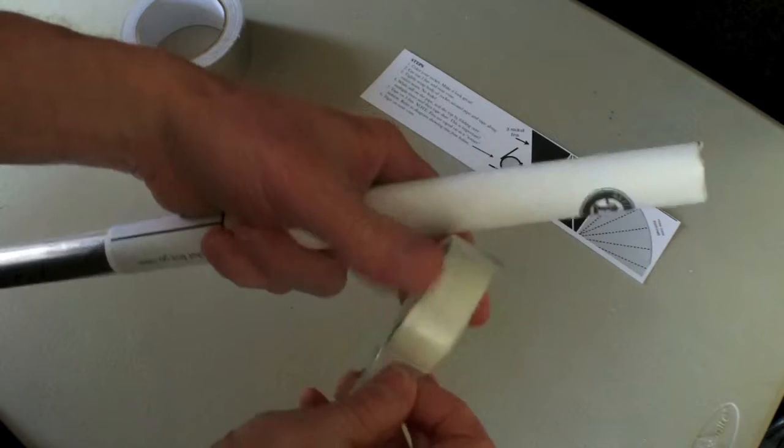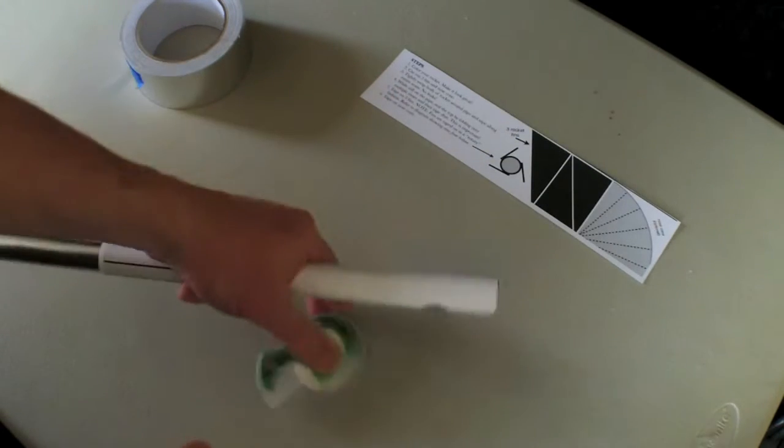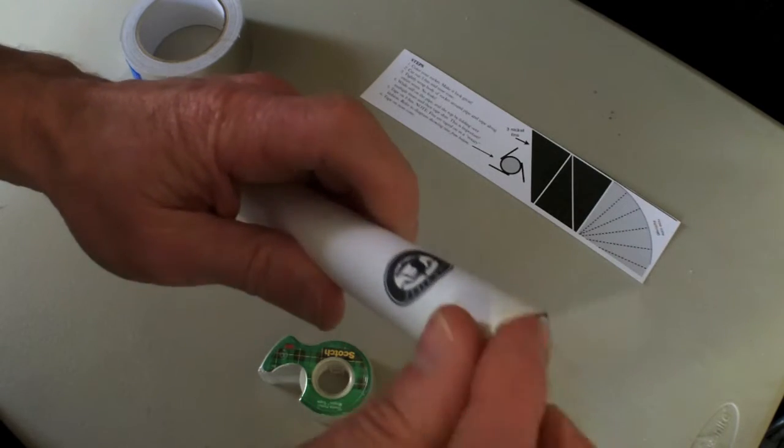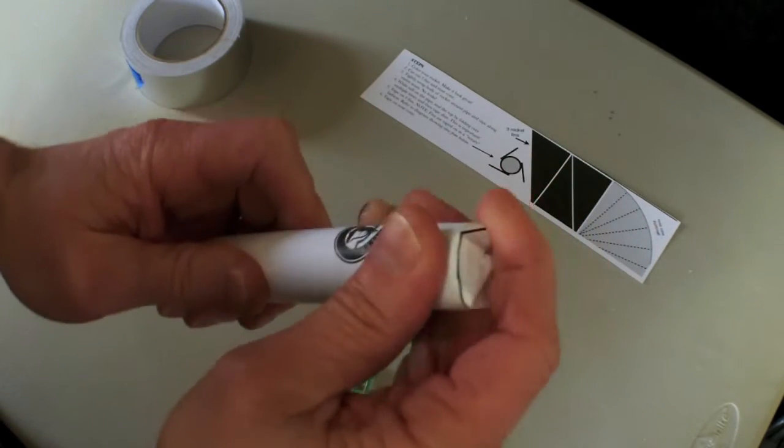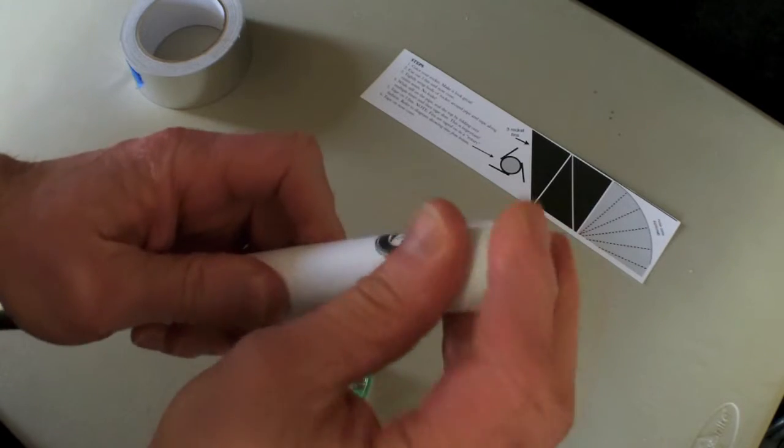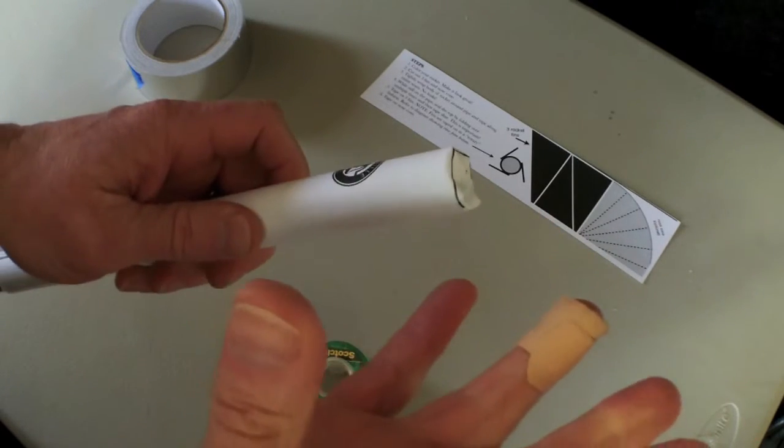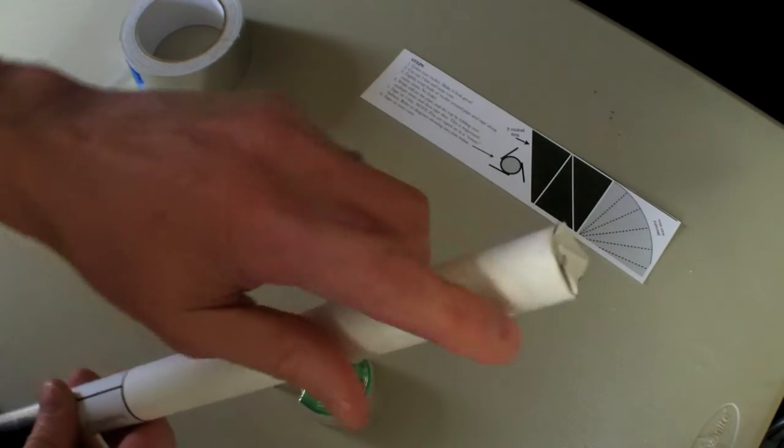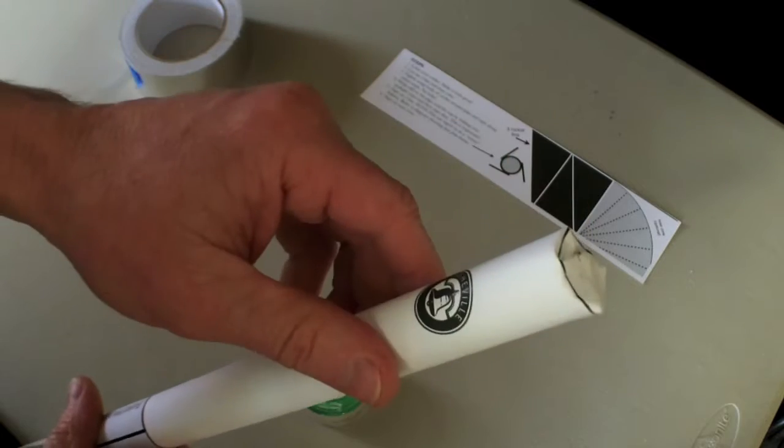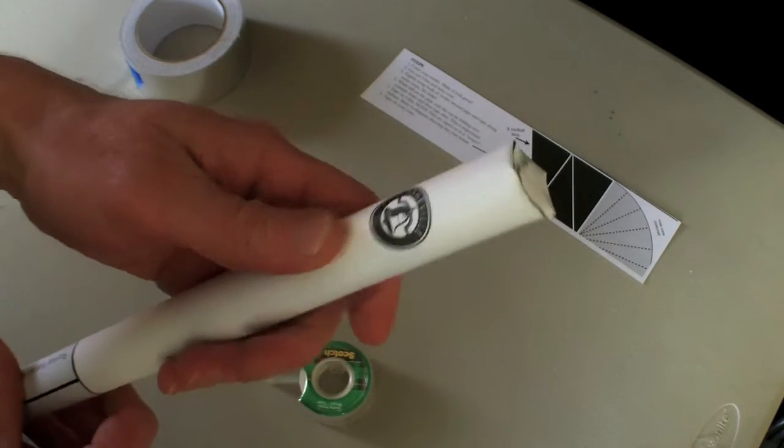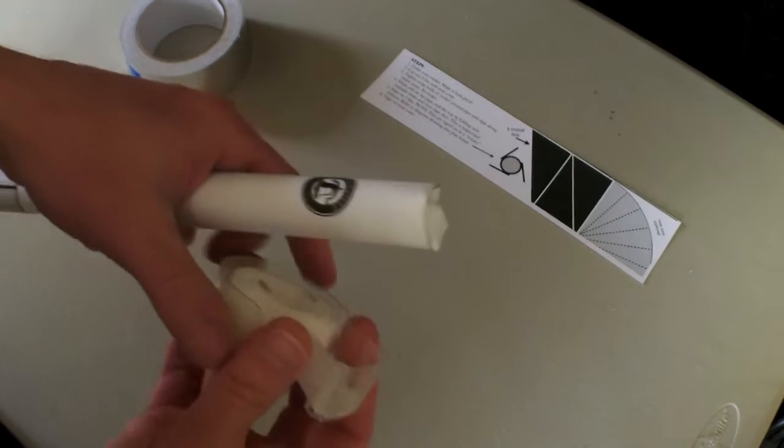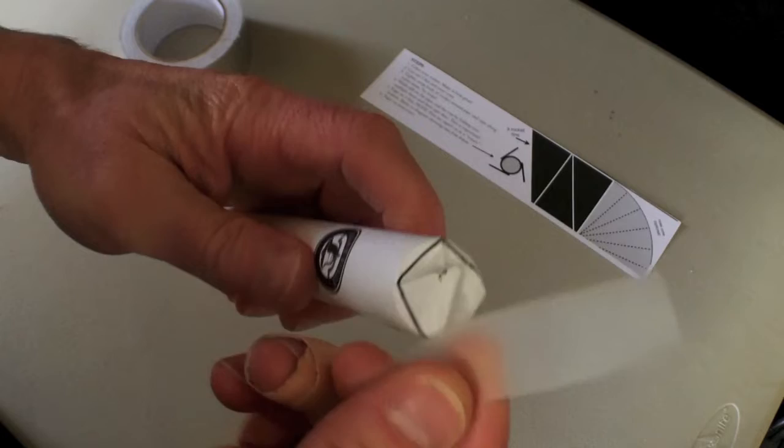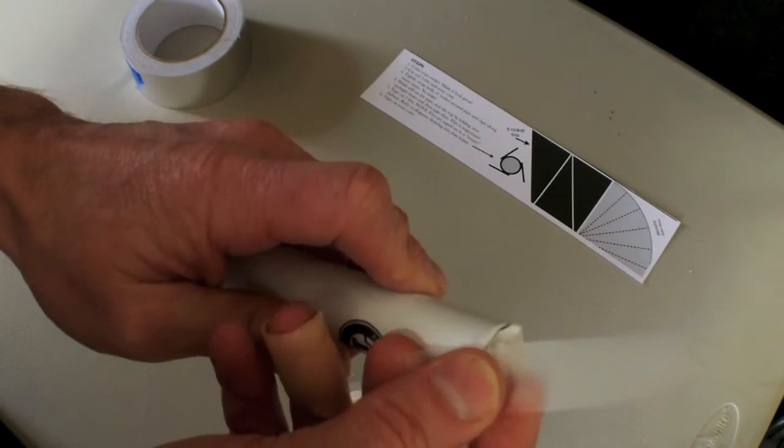Then we're going to take tape and put the tape over top of here. When this rocket launches, if you don't tape this up here, it's just going to blow the top open. Now, if there was one place to use more heavy-duty tape, it would be across the top here. So you might want to use packaging tape or duct tape or at least put several layers of this tape on in different directions.